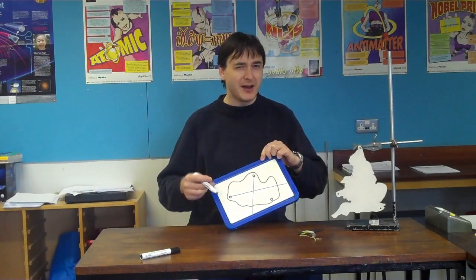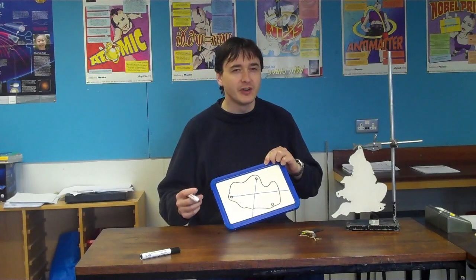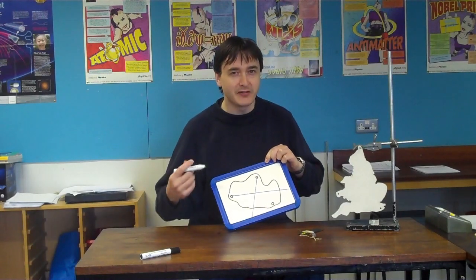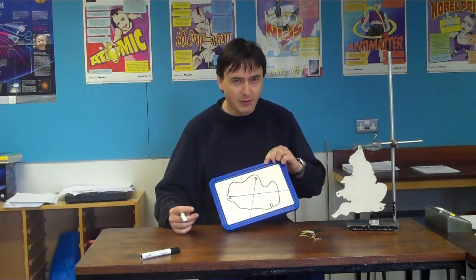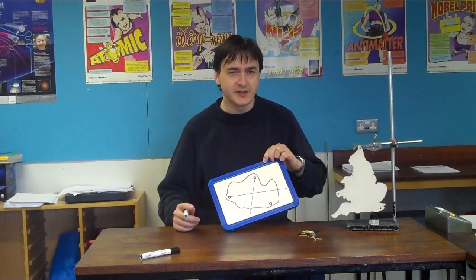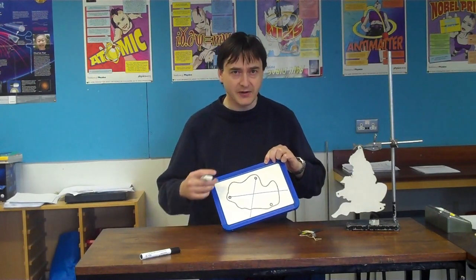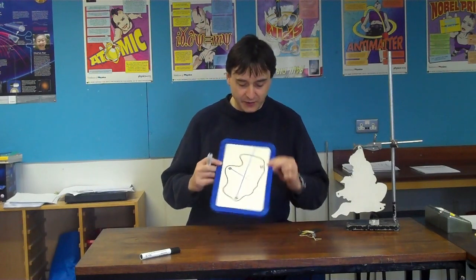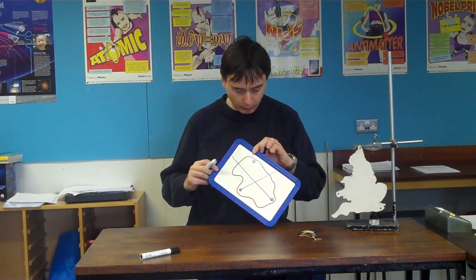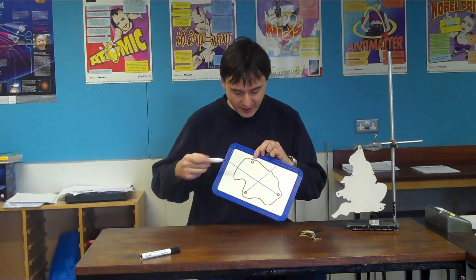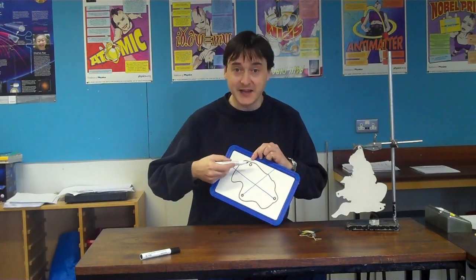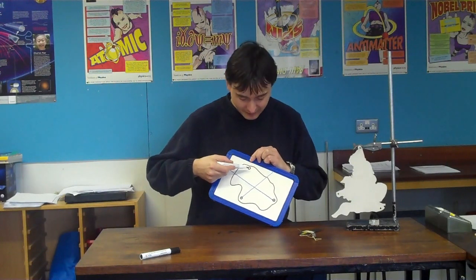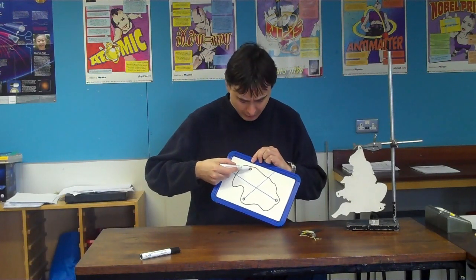Now, as any good experimenter knows, what we should always do is repeat our experiment quickly to check our results, and we can do that by making a third hole, like I've got here, dangling it again, and then making a third line.